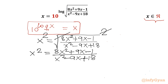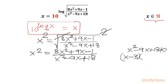Our denominator should not equal zero for real solutions. So x² − 9x + 18 ≠ 0. After factorization, (x − 3)(x − 6) ≠ 0, meaning x should not equal 3 or 6.